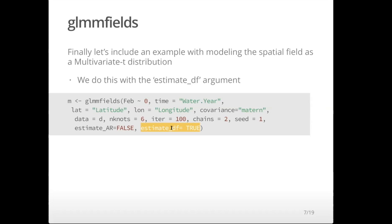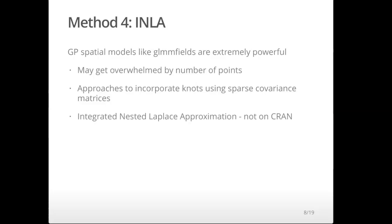The downside we found with these models is that when the dimensionality of the spatial surface is very high — if you have hundreds of points per time step and want to estimate even a Gaussian predictive process model with 40 or 50 knots — this kind of model would probably take overnight to run. It tends to be pretty slow because of the inefficient sampling associated with these models. So there's a need for faster computation or slightly different models.